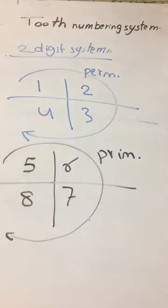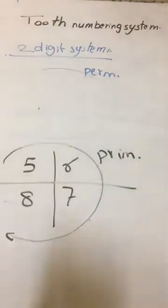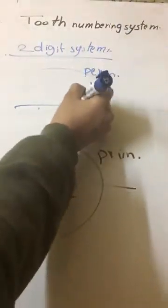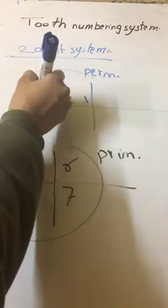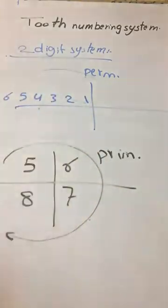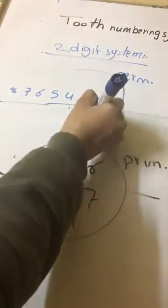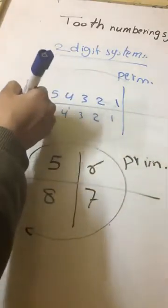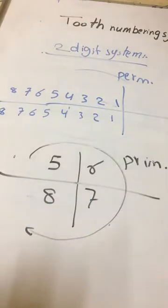It is, for example, if you make the same thing, numbering from one till eight. One, two, three, four, five, six, seven, eight. But leave space because I will make another number. Two, three, four, five, six, seven, eight. It consists of two numbers. The first represents the quadrant, and the other one indicates the number of the tooth.